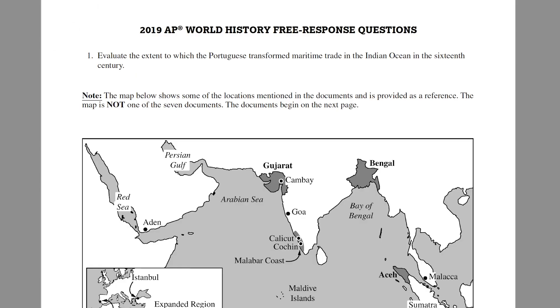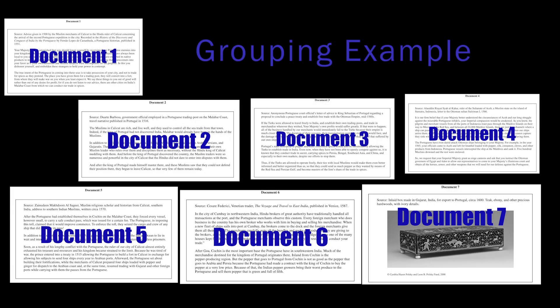So what does this look like on an actual DBQ? Let's look at the 2019 released DBQ — the Portugal in the Indian Ocean DBQ. This is a DBQ that Heimler talks about in his overview of changes to the 2020 DBQ, which means technically my videos exist in the same multiverse as Heimler's videos. I'm going to assume you've taken the time to look at the 2019 released documents. If you haven't, pause the video, go to the College Board website, look over the documents and be passingly familiar with them. So assuming you have looked at them, let's talk about two ways we might group these seven documents.